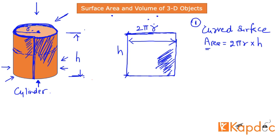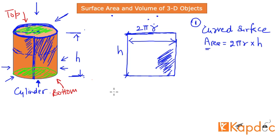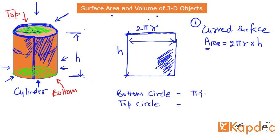What other areas still remain in this object? There is a circle at the top and a circle at the bottom on which the cylinder rests — two circles. Those two surface areas still need to be included, and each will simply be computed as πr², where r is the radius of the cylinder.